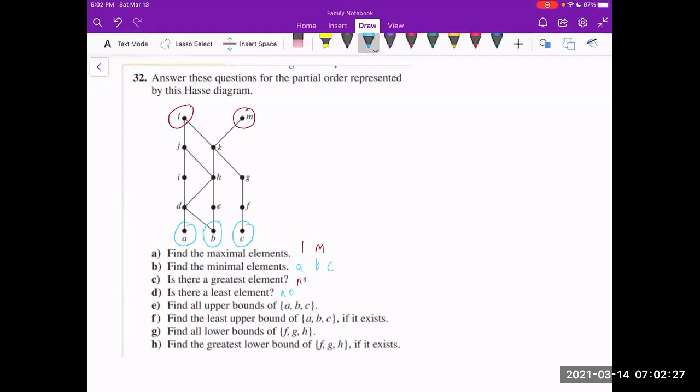Now what we're going to be doing is finding all the upper bounds of A, B, and C. So all the upper bounds refers to all the elements that A, B, and C are all going to be less than. So for example, we cannot choose D because C is, we don't know if C is less than D. There currently is no way to compare.